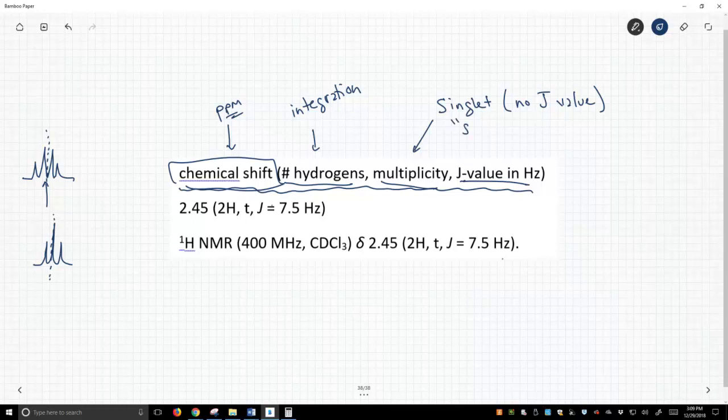So a singlet would be S. A doublet equals D. Triplet is T. Quartet is Q. That's an ugly Q, but you get the idea.